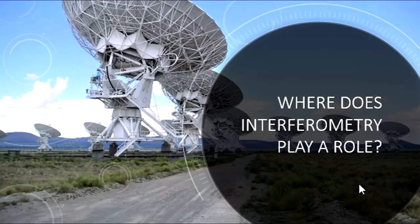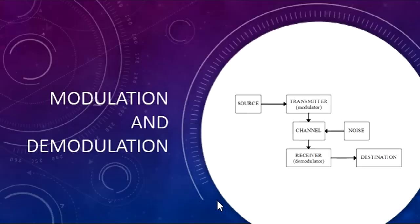Interferometry is a family of techniques in which waves, usually electromagnetic ones, are superimposed causing the phenomenon of interference, which is used to inscribe and extract information. Using such methods, it became easier to use modulation and demodulation to transfer in a coded manner. Now, let us talk about modulation and demodulation.